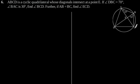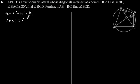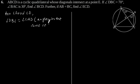Now, considering chord CD, angle DBC is equal to angle CAD, since they are angles in the same segment. Therefore, angle CAD is equal to 70 degrees.